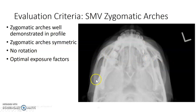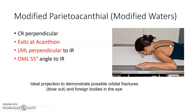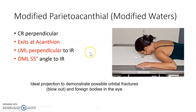On the SMV, we're looking for the zygomatic arches side by side. There's also a modified Waters for facial bones — we don't do this routinely at our clinical site, but it's something you want to know for boards. It exits at the acanthion, but this is the only projection I know of that uses the LML. The LML is perpendicular to the IR, and the OML forms a 55-degree angle to the IR instead of the 37 degrees.